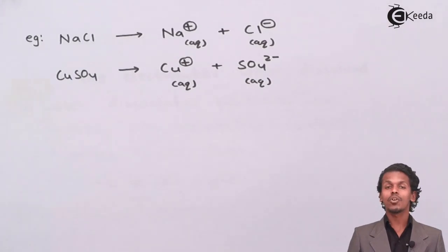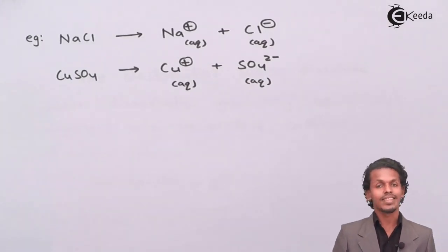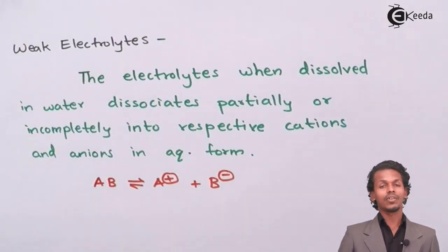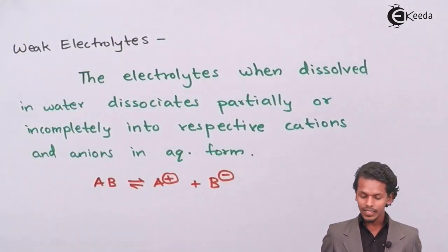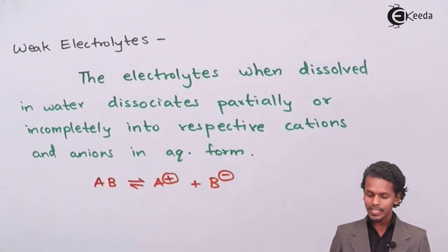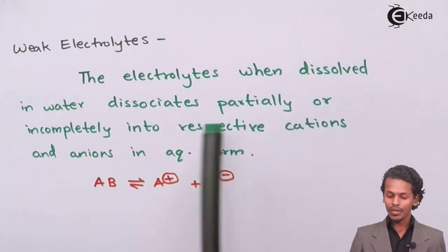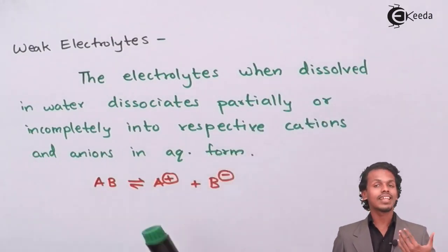So now let us talk about the second one, that is weak electrolytes. Weak electrolytes are nothing but the electrolytes when dissolved in water dissociates partially or incompletely into their respective cations and anions.